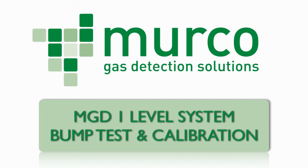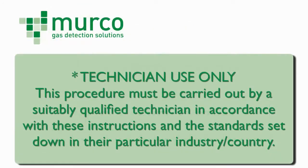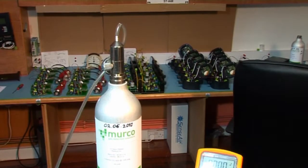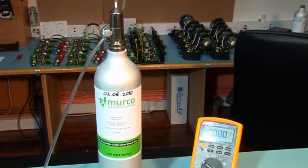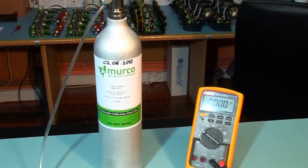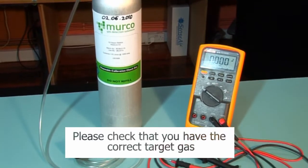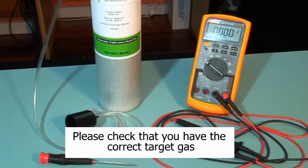The following procedure is a bump test and calibration for an MGD unit. This is a mains voltage supply unit and caution should be applied when removing the MGD cover. The tools required are a digital voltmeter with a resolution to two decimal places, crocodile clips and/or a test probe, a flatbed screwdriver, and a Merco calibration kit which includes your cylinder of calibration gas, flow regulator, flexible non-absorbent tubing, and a vented calibration hood.